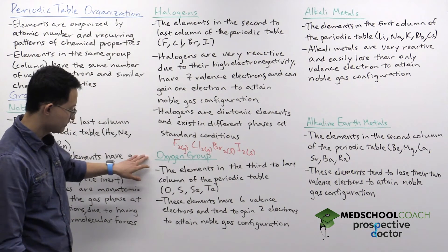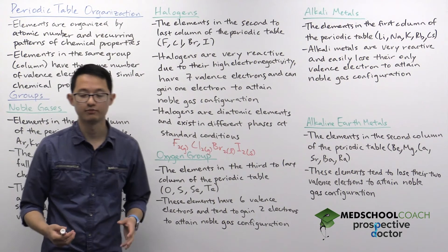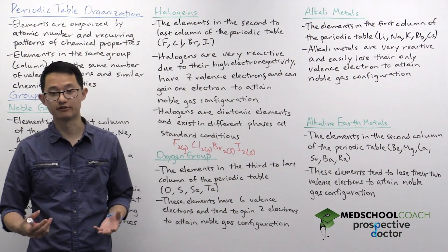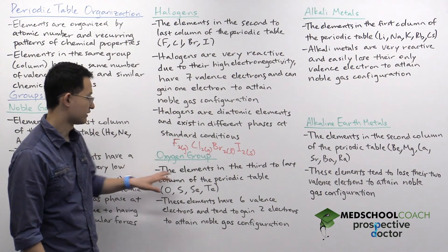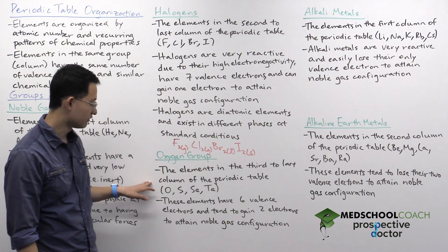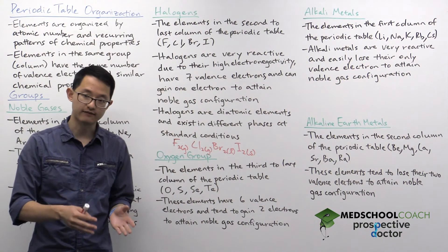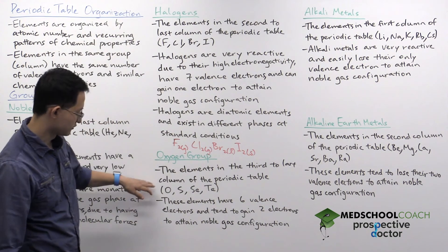Okay. Our next group is the oxygen group. The oxygen group is essentially named as being the group containing oxygen. This is the second to last, or sorry, third to last column of the periodic table. So two to the left of noble gases. This includes oxygen,